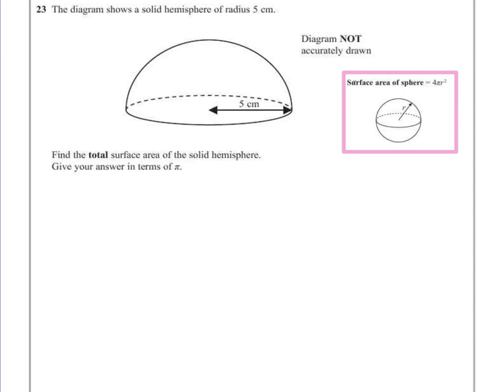Question 23. The diagram shows a solid hemisphere of radius 5 cm. The diagram is not drawn accurately. Find the total surface area of the solid hemisphere. Give your answer in terms of pi.